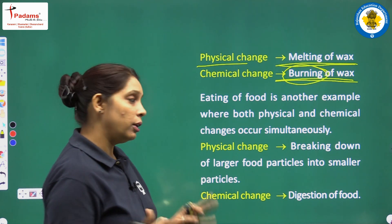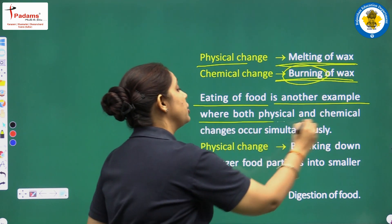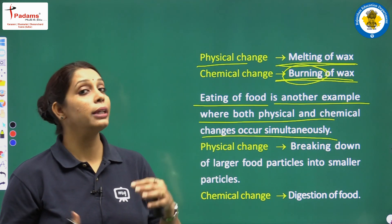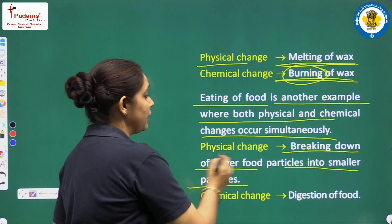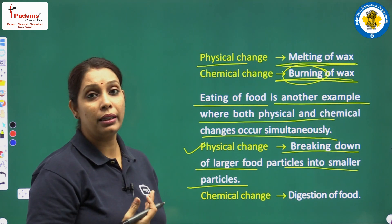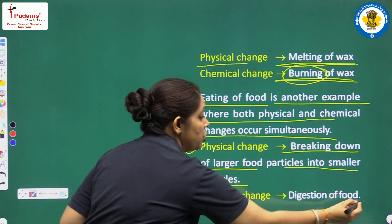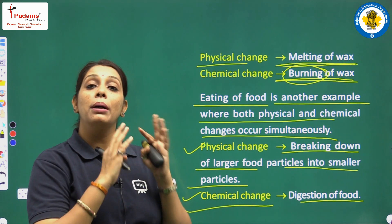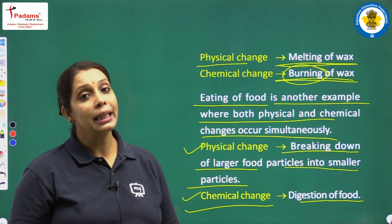Give another example of a process where both physical and chemical changes occur simultaneously. Eating of food is another such example. The physical change is breaking down of larger food particles into smaller particles — that is chewing of food. You chew the food in your buccal cavity with the help of teeth — that is a physical change. And digestion of food is a chemical change.